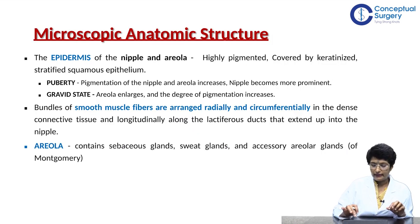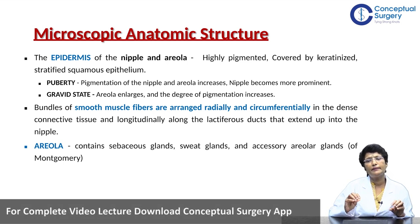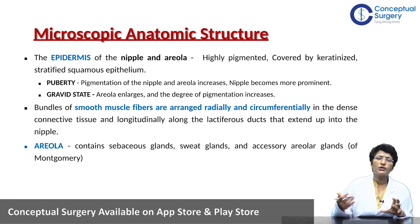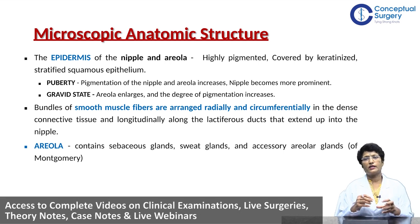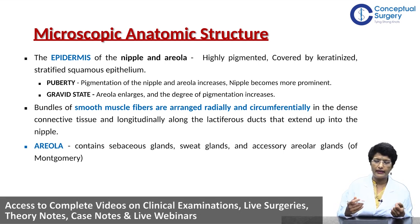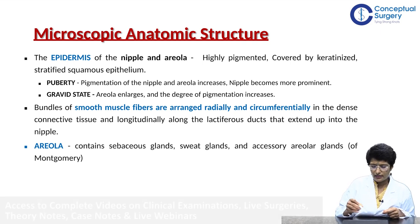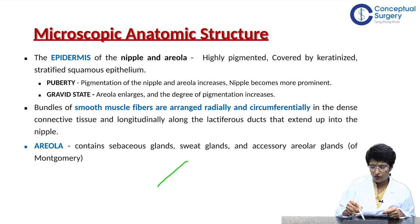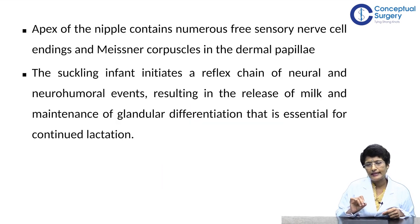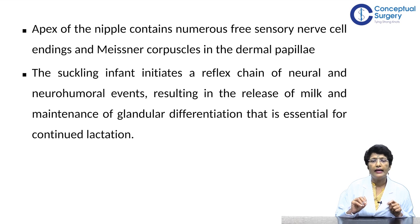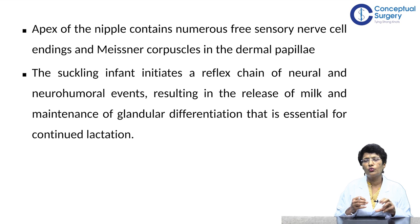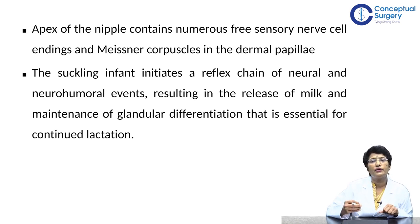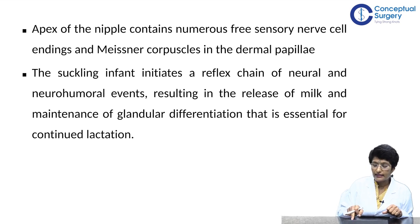Looking at the areola and nipple: the nipple and areola have highly pigmented epidermis covered by squamous epithelium, and they undergo changes during puberty and in the gravid state. The areola enlarges and pigmentation increases during pregnancy. There are smooth muscle fibers arranged radially and circumferentially at the nipple, and numerous free sensory nerve endings are present — that's why it's hugely sensitive. There are also Meissner's corpuscles within the papilla. When the child is suckling, it sets up a reflex chain of neural and neurohumoral events resulting in milk release.